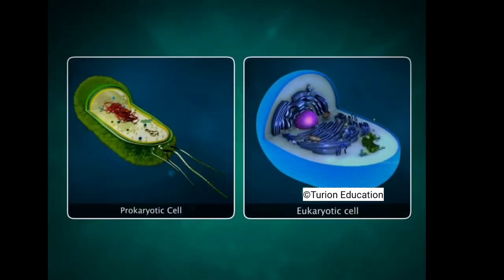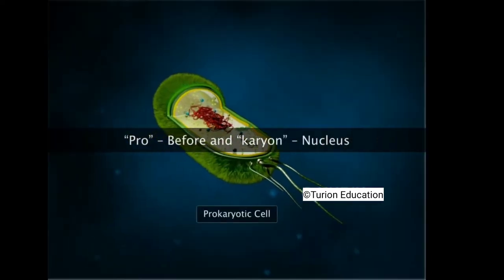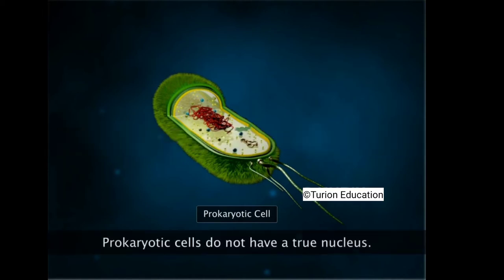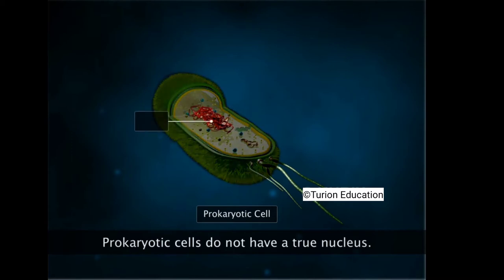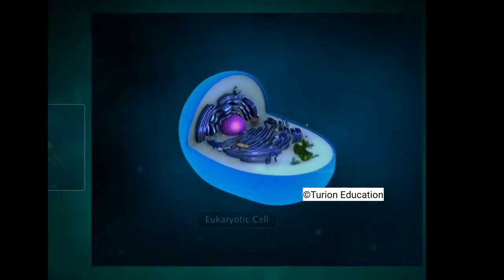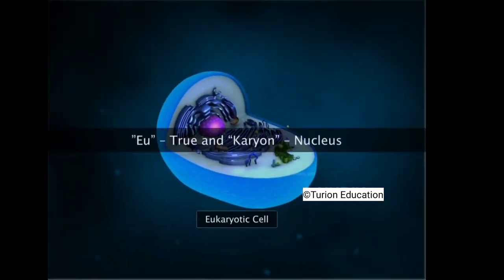All living organisms possess either prokaryotic cells or eukaryotic cells. 'Prokaryote' is a Greek word — 'pro' means before and 'karyon' means nucleus — so prokaryotic means 'before nucleus.' The DNA in these cells lies exposed in the cell cytoplasm. The word 'eukaryote' comes from 'eu,' meaning true, and 'karyon,' meaning nucleus.